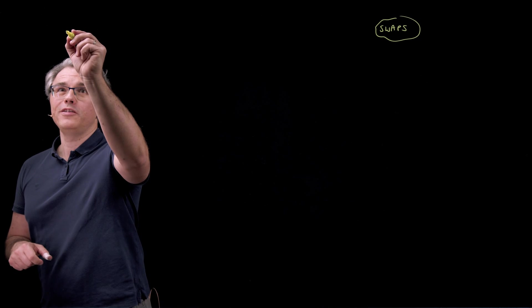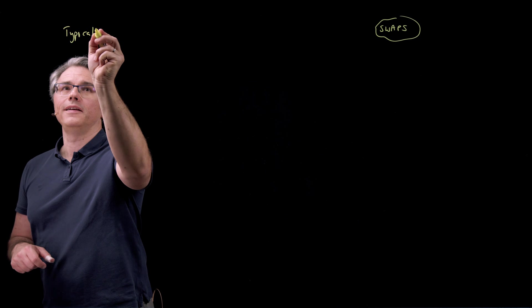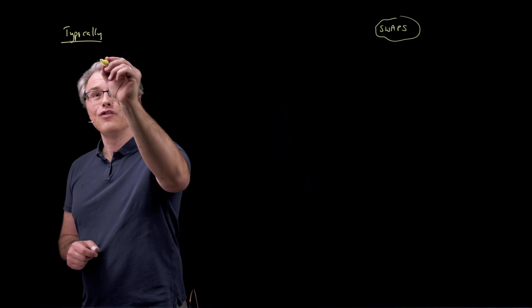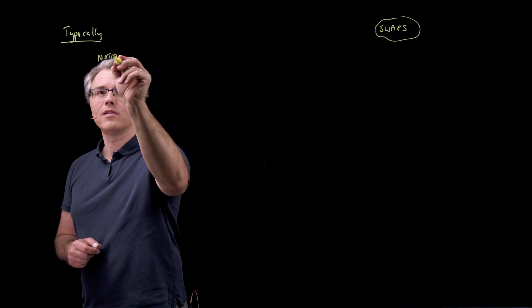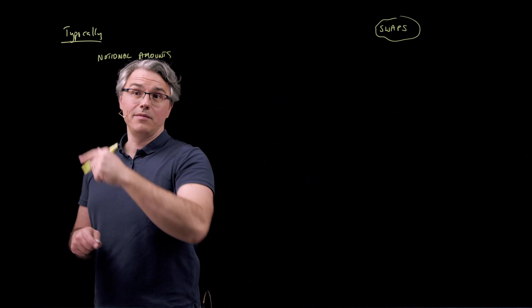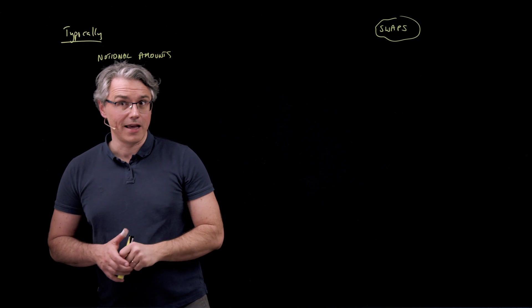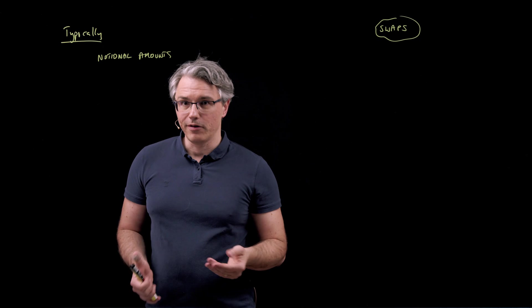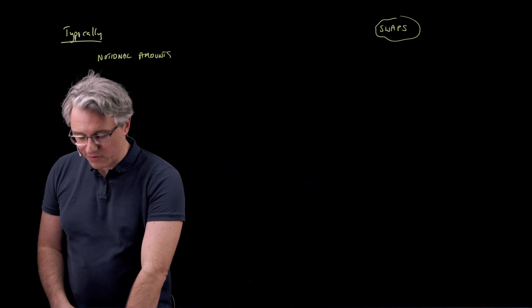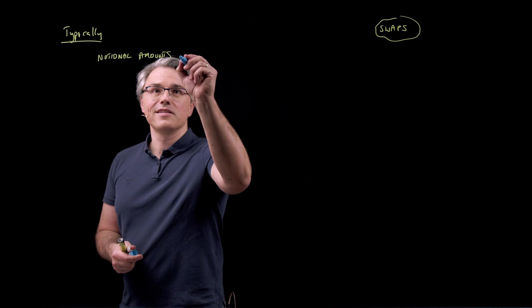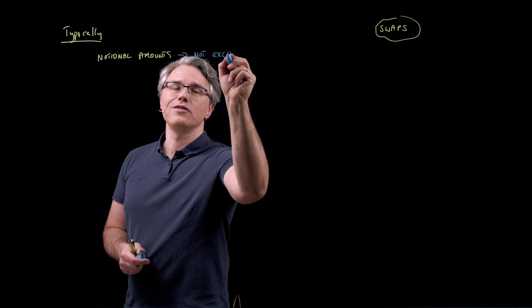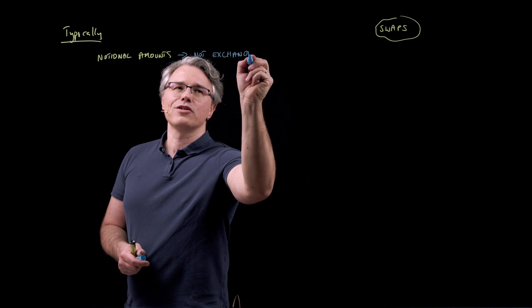And to finish off what is a rather quick video or short video on swaps, I want to just jot down some typical features of these instruments. Typically what you'll find is that the notional amounts, in my example just a moment ago that was the 1 billion euros, that's never exchanged between the two sides because why exchange 1 billion for 1 billion.